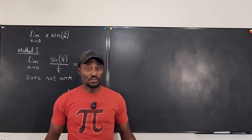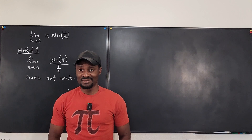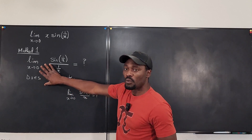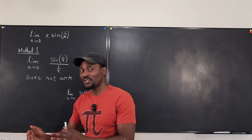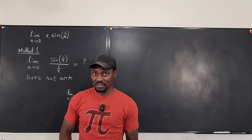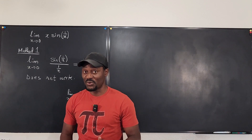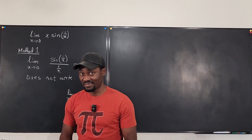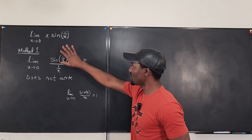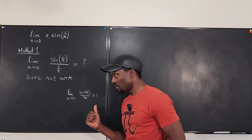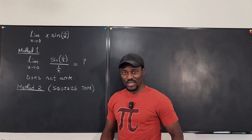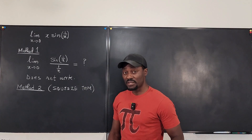So we have to try another method. Whenever algebraic simplification does not work, if you're coming from calculus one, the next available method to you is the squeeze theorem. Once this doesn't work, the squeeze theorem should work. Let's try it — let's go into the second method: squeeze theorem.